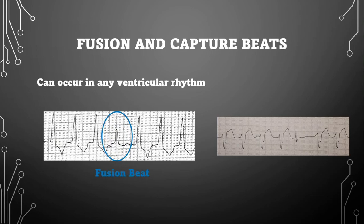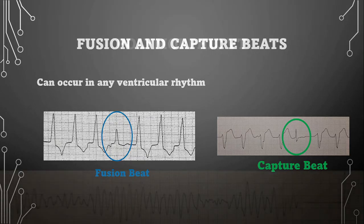A fusion beat is when an impulse from the atria comes down the normal conduction pathway at the same time a ventricular impulse is occurring, creating a hybrid complex. These beats will have a different morphology than the underlying ventricular rhythm and a widened QRS. A capture beat is a beat from the atria that captures before the ventricular rhythm causes another complex — this will have a narrow QRS.